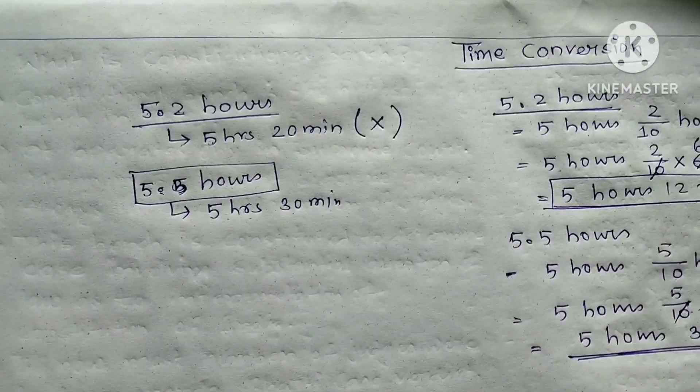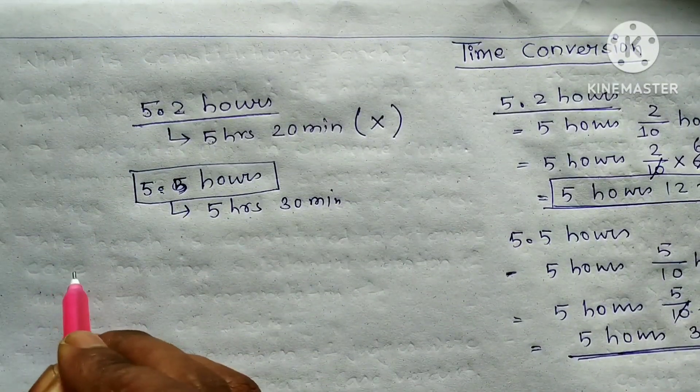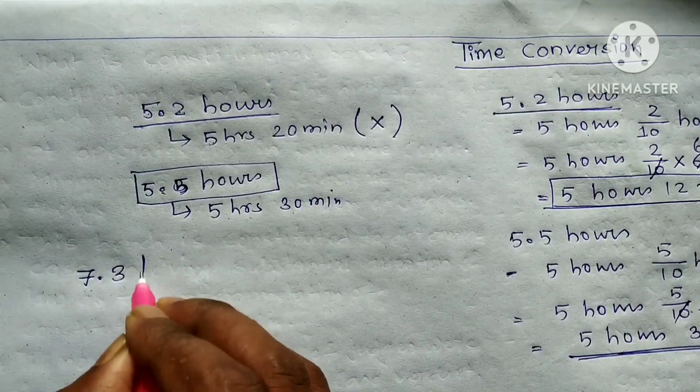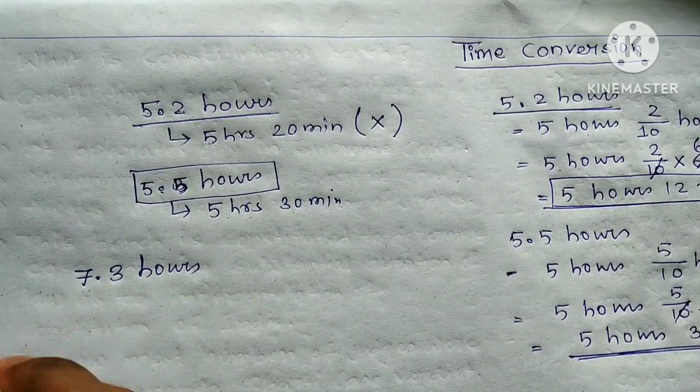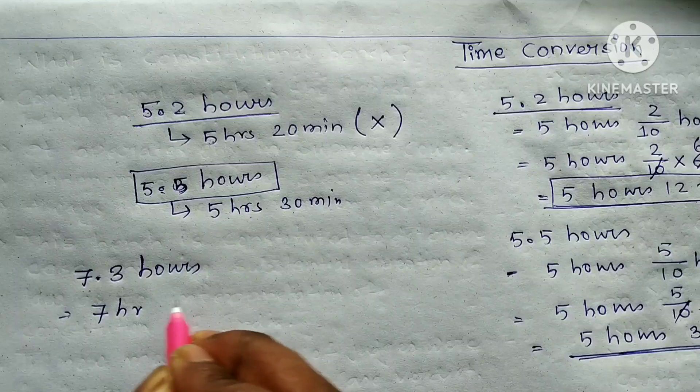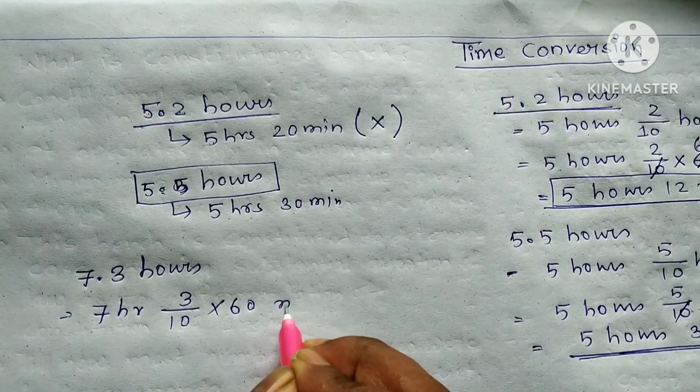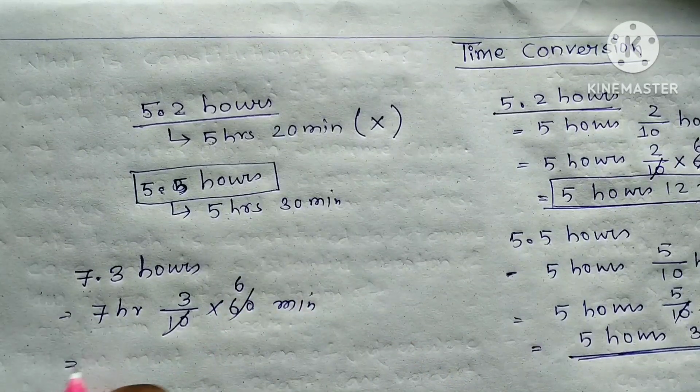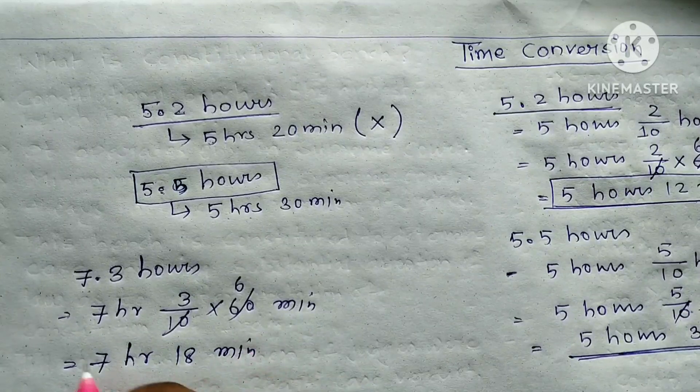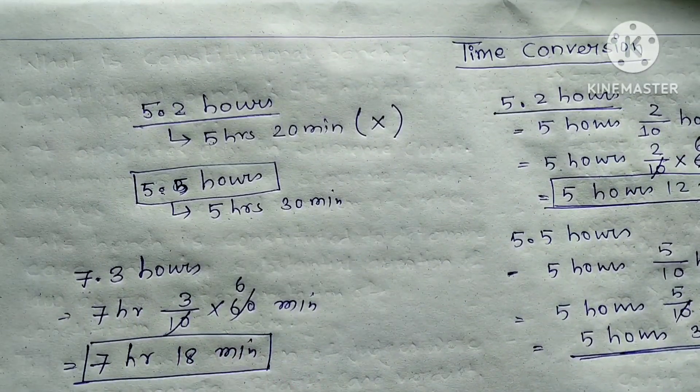So the answer is 5 hours, 30 minutes. Similarly, for other decimal values, multiply the decimal by 60 to get the minutes portion.